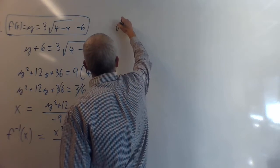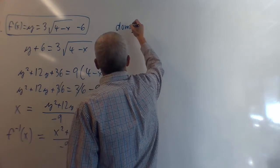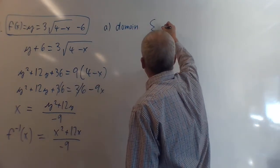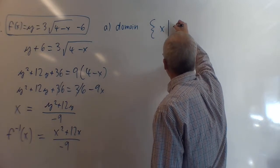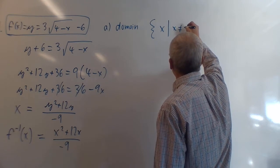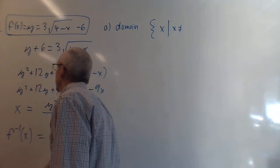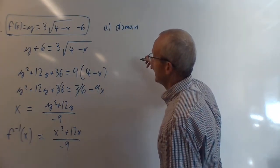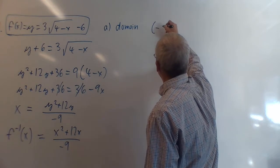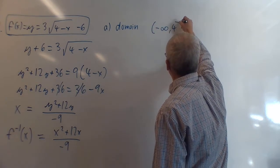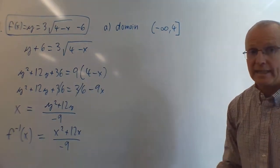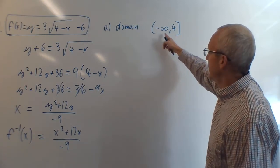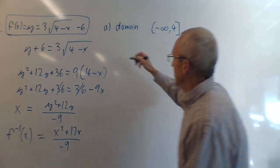So the domain of f(x) in interval notation: x can go from negative infinity up to 4. We use a square bracket at 4 because it can equal 4, and a parenthesis at negative infinity since we can't reach it. Domain: (-∞, 4].